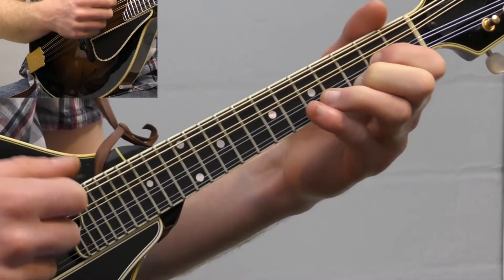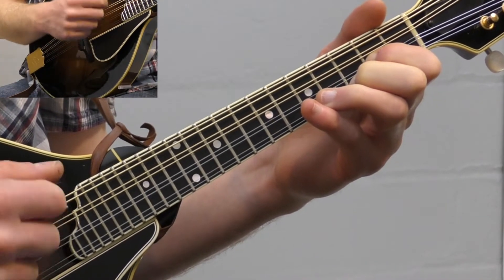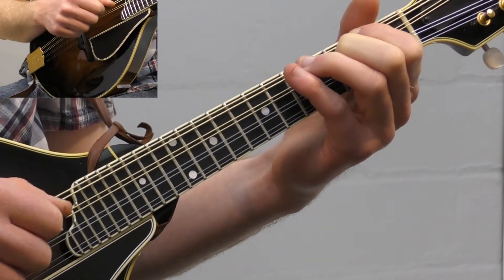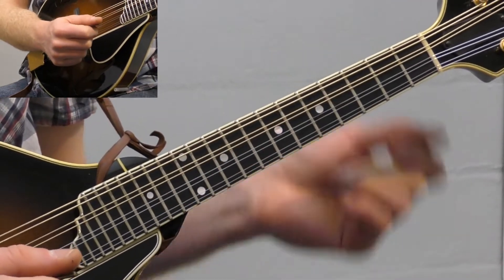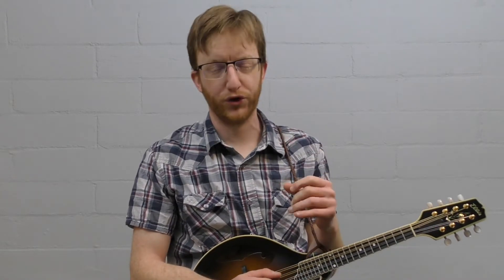So where I heard Sam Bush use this is in the B part to Patty on the Turnpike. Same with Ronnie McCoury again. If you have like an F or a G, excuse me, a G and then F, it's just a nice, it gives your solo or your little idea like a theme that you're now playing over the chord changes.